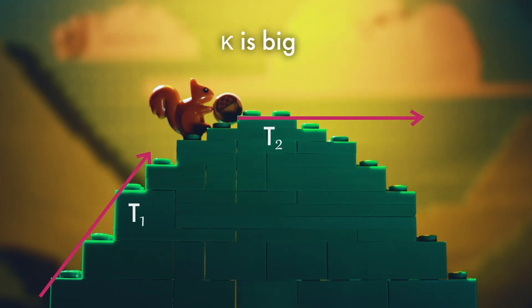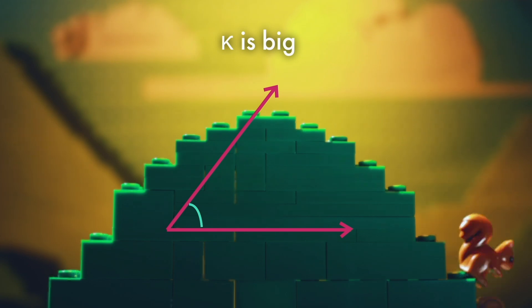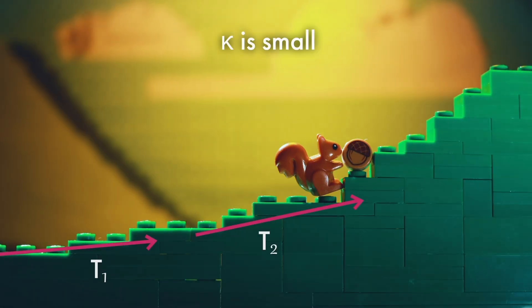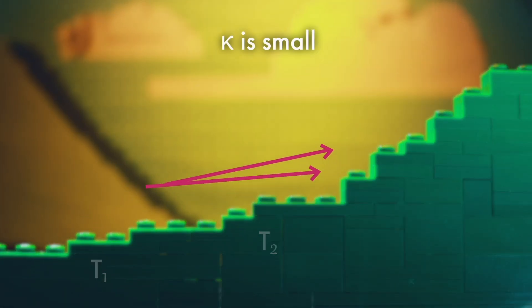So if kappa is big as you move along the curve, the tangent changes a lot. And if kappa is small as you move along the curve, the tangent vector keeps pointing in much the same direction.